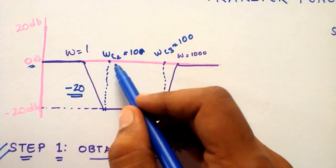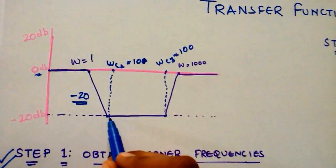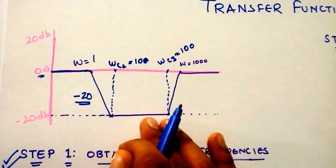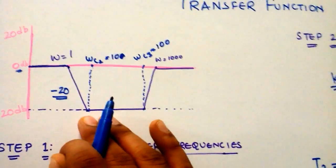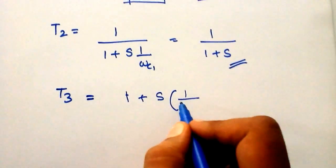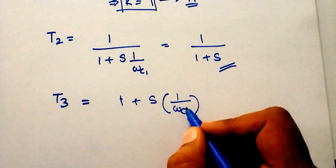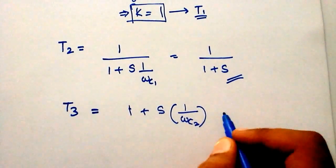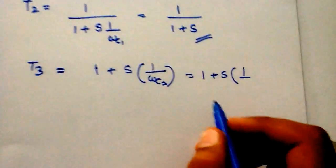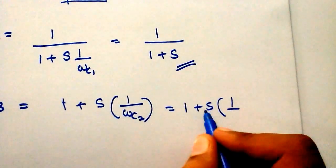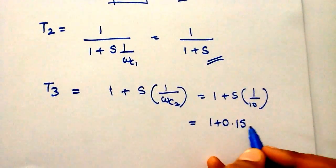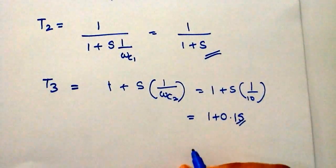t3 is the term at omega C2 equal to 10. At that frequency the slope goes from minus 20 back to 0, meaning the slope has increased, so t3 goes into the numerator: 1 plus s times (1 over omega C2), which equals 1 plus (s over 10), which equals 1 plus 0.1s.